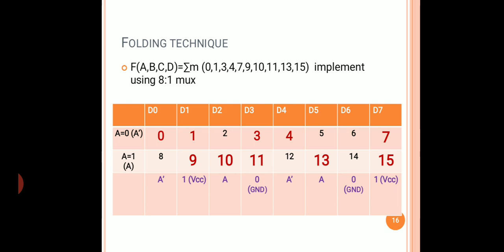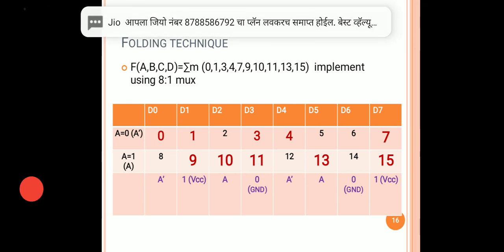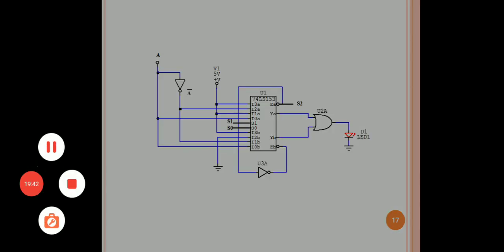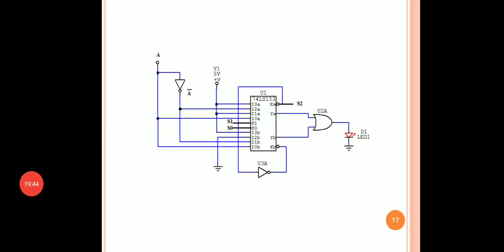The select lines S2, S1, S0 are connected to the B, C inputs. While testing the circuit, the output should be 1 for the minterms given in the question — that means output should be 1 for 0, 1, 10, 11, and 13. This is the implementation of the previous circuit using IC 74153, which we have to implement during the practicals.